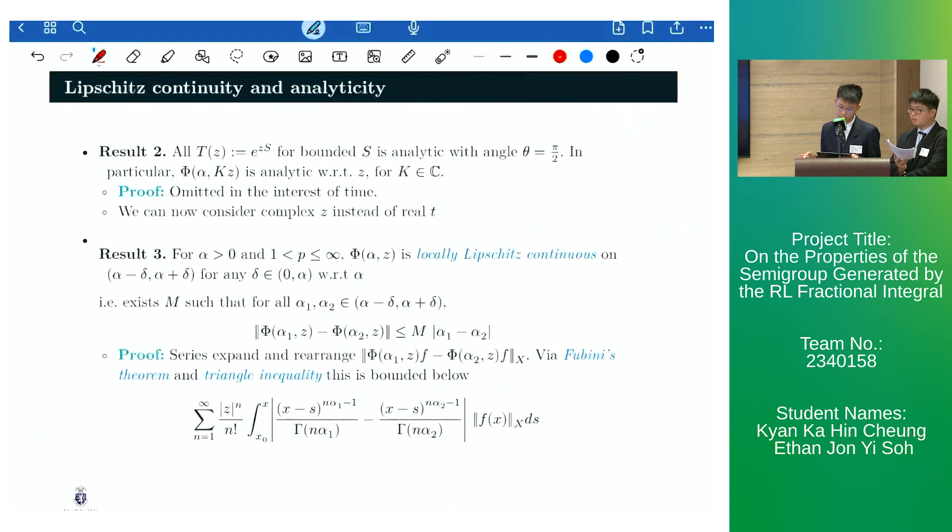Our next results are regarding the well-behavedness of phi. Result 2 states that all semigroups, which can be expressed in the following way, whereby S is a bounded operator, are analytic with angle theta equals to pi over 2.